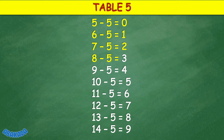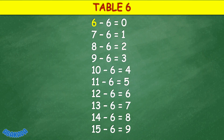Table 5: 5 minus 5 equals 5, 6 minus 5 equals 1, 7 minus 5 equals 2, 8 minus 5 equals 3, 9 minus 5 equals 4, 10 minus 5 equals 5, 11 minus 5 equals 6, 12 minus 5 equals 7, 13 minus 5 equals 8, 14 minus 5 equals 9.